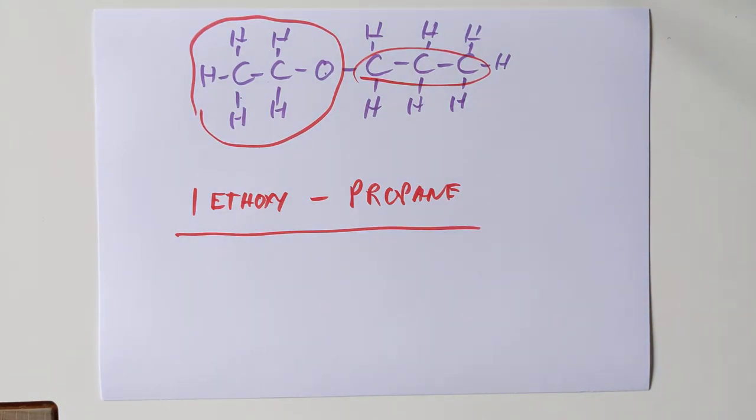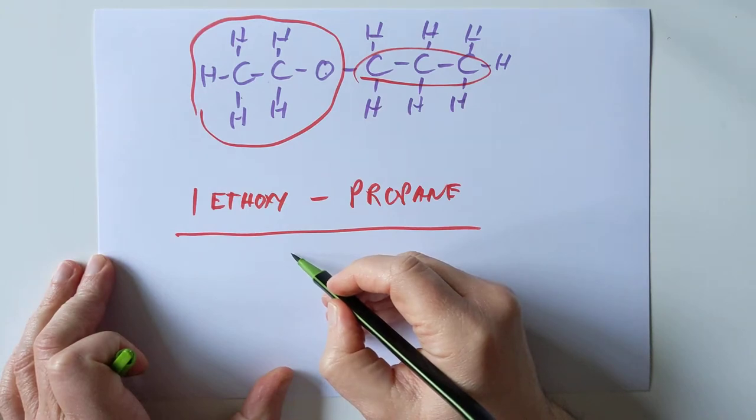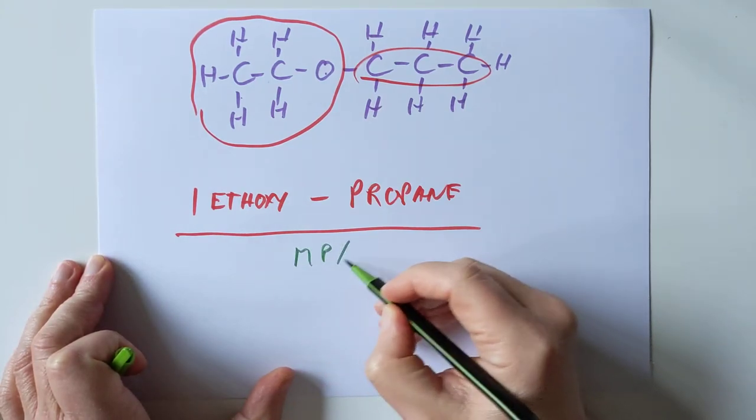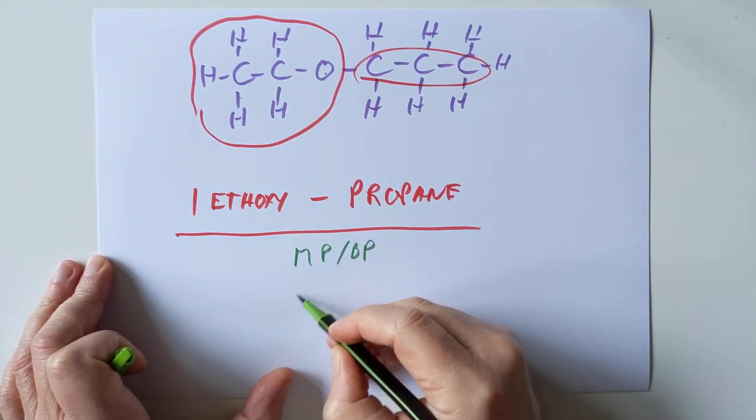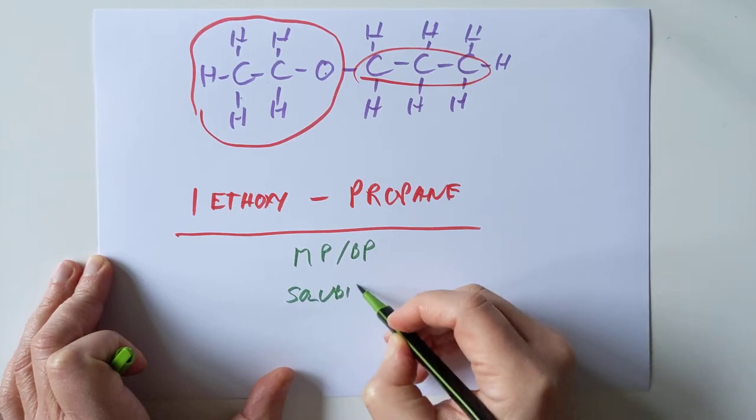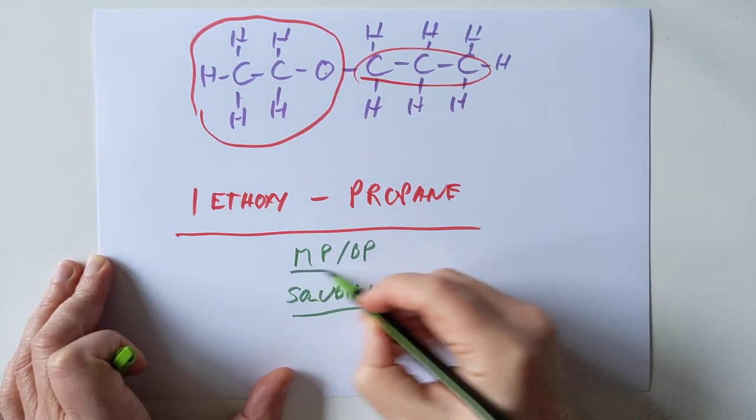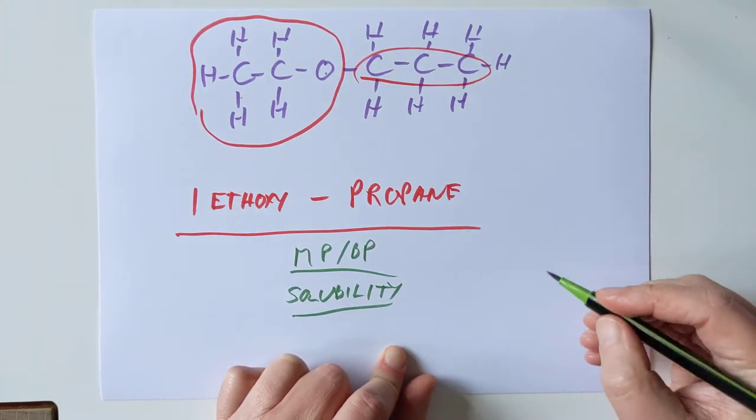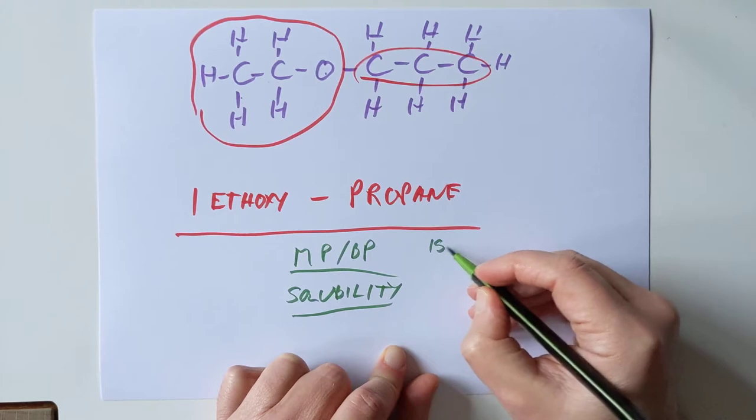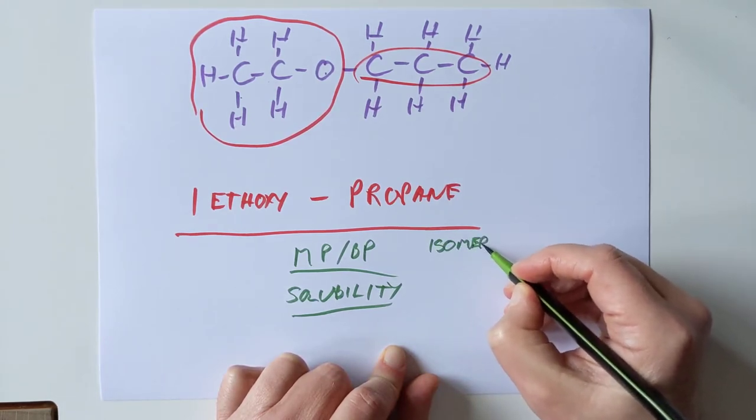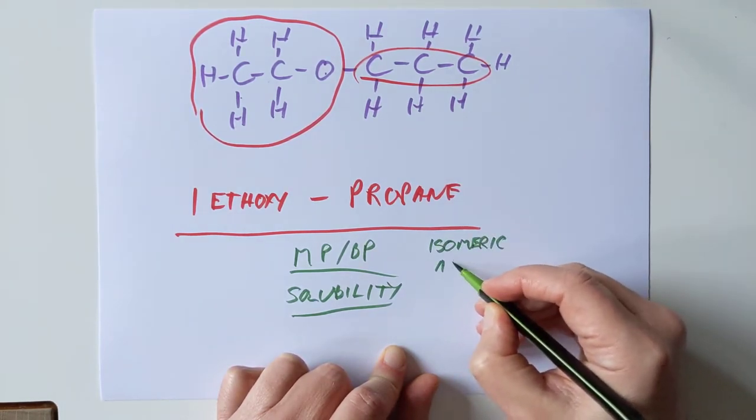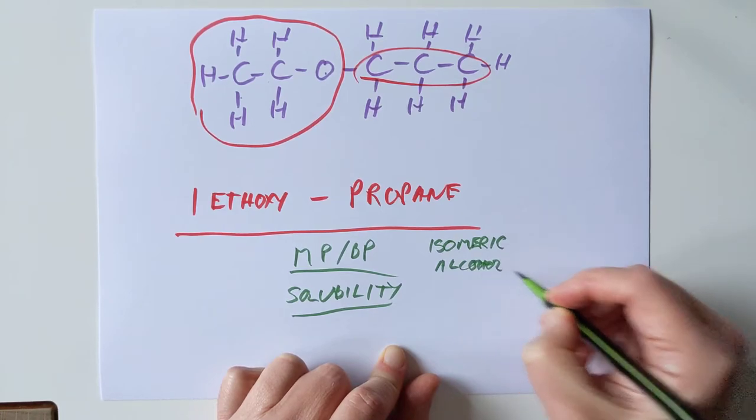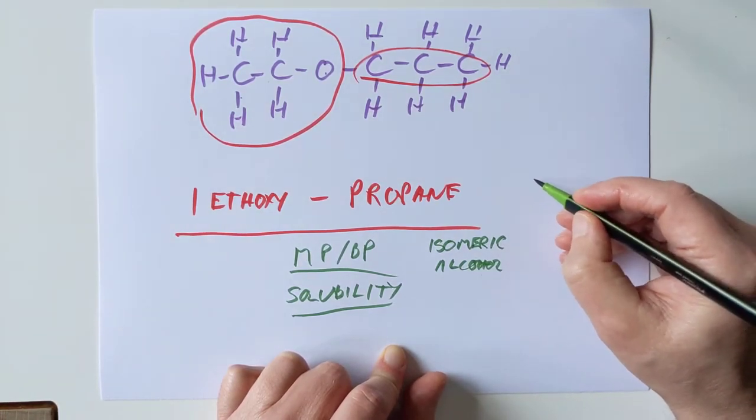So I did say I would do naming and uses. I haven't missed anything out from the SQA yet. Oh yes, physical properties. You are required to know the melting and boiling point tendencies. You're also required to know solubility. These are isomers of alcohols. Ethers are isomeric with the alcohol family.